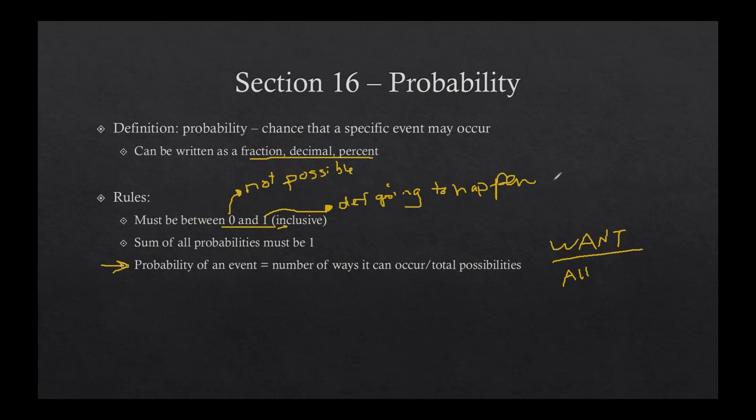Weather forecasting is all probability. The percent chance of rain is 80% — that's pretty close to 100, so you take an umbrella to work. If the chance of rain is zero, I'm not taking an umbrella. So if we have 100% chance that something is happening, it's definitely going to happen. Generally, we have stuff in between zero and one — very seldom is something zero or one.